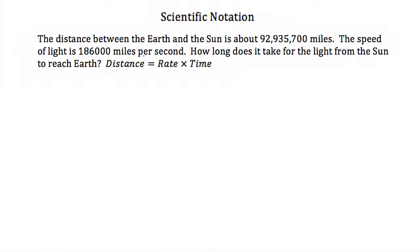Well before I said the scientific notation is useful when you have very large numbers. Well here we have that the distance between the Earth and the Sun is about 92,935,700 miles. The speed of light is 186,000 miles per second. So how long does it take for the light from the Sun to reach Earth?